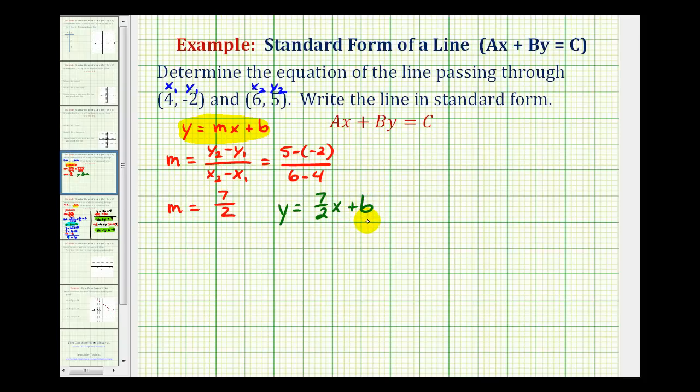And we can do this by using one of the given points and substituting in the value for y and x, and then solve for b. Remember, since these points are on the line, they must satisfy this equation. So if we decide to use this first point here, we would substitute four for x and negative two for y.